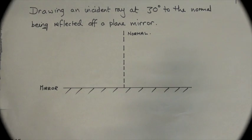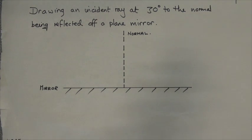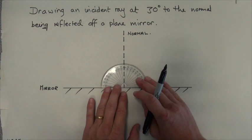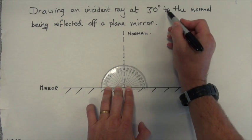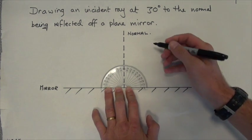Let's put the information onto our diagram. I've got an incident ray coming in at 30 degrees to this normal line. I use my protractor and measure 30 degrees from the normal. Remember, it's important that we measure to or from the normal.